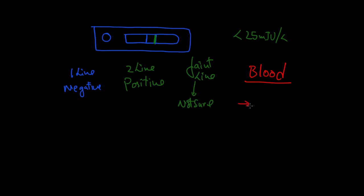The major advantage of the blood test is that it is a quantitative test — it gives a number, just like your glucose levels. For example, this female's beta HCG levels might be 10,000, 20,000, or 30,000. That is what we call a quantitative result.